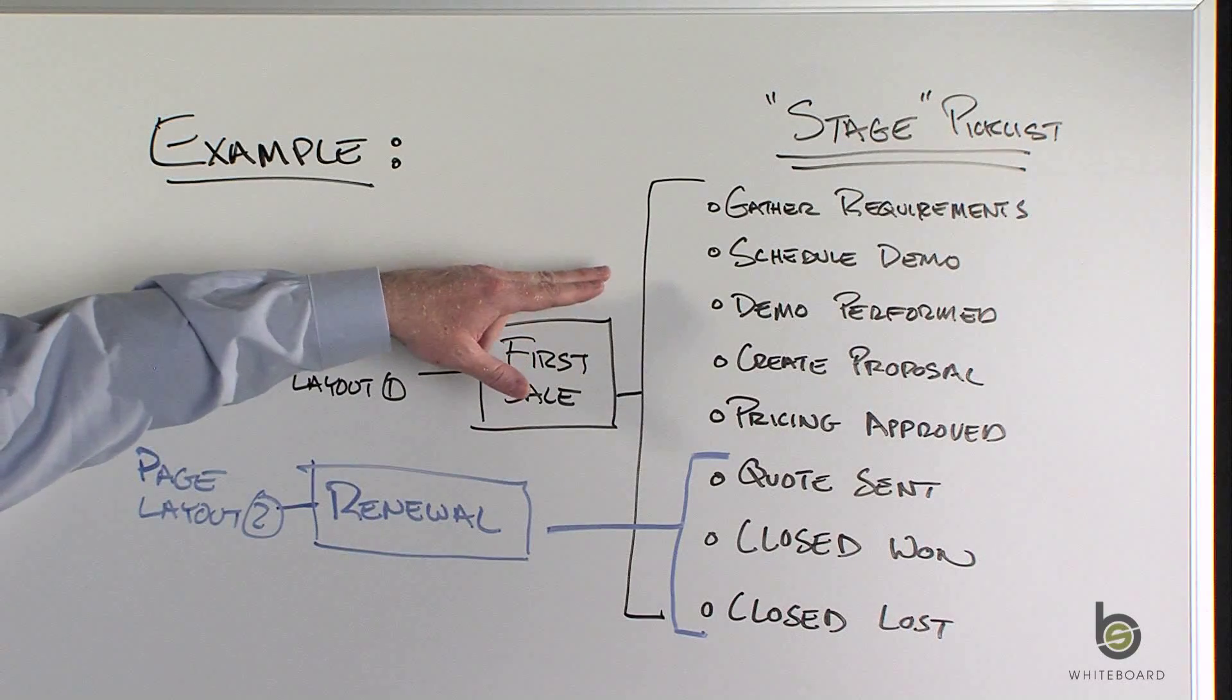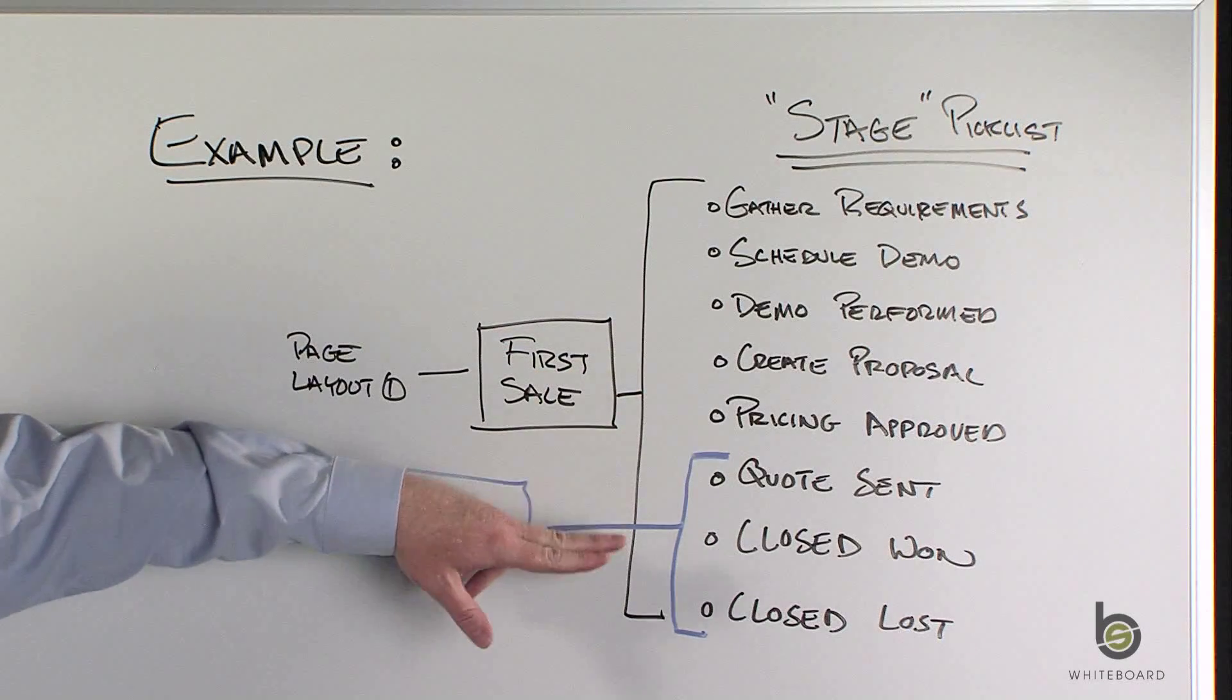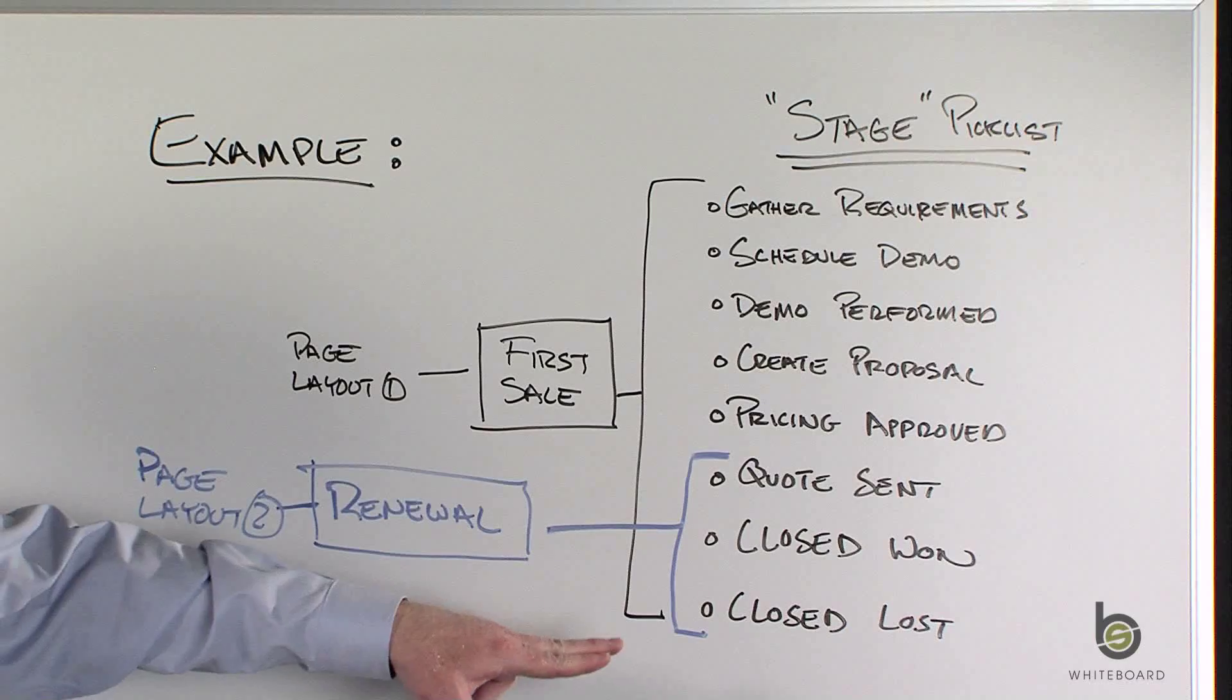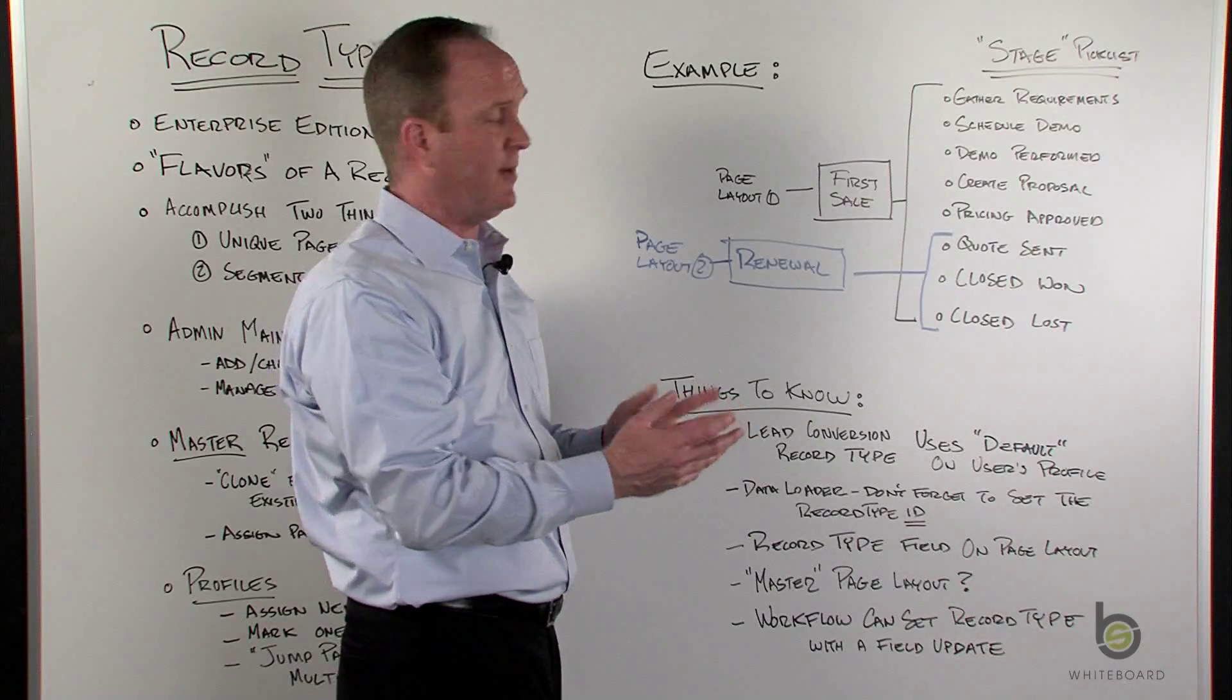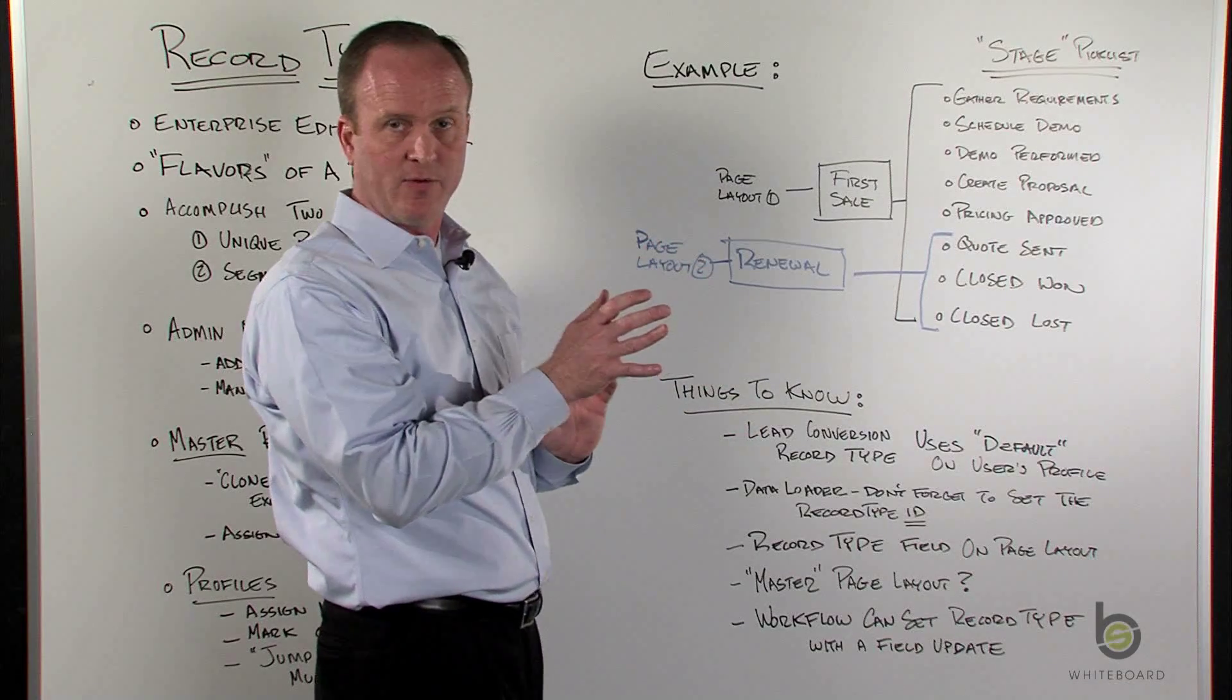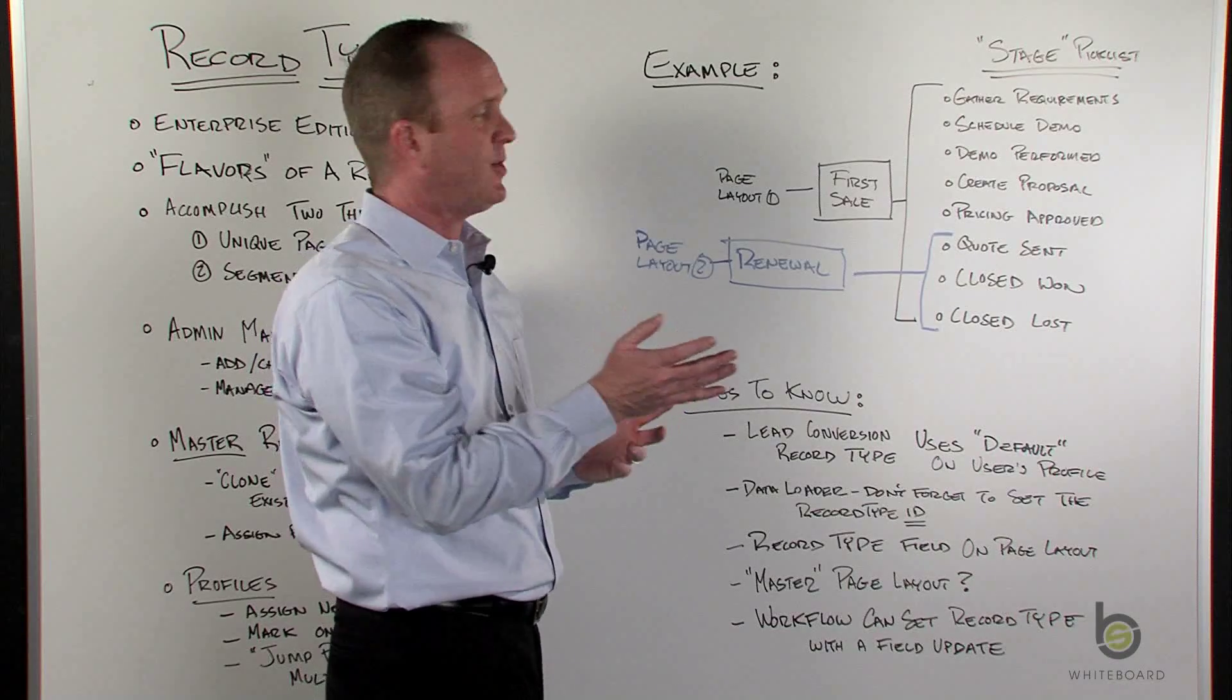So the Opportunity Stage picklist values that I have in this particular sales process: gather requirements, schedule demo, demo performed, create a proposal, pricing approved, quote sent, close won, and close lost. So these are all the picklist values that I have available to me. I have two record types.